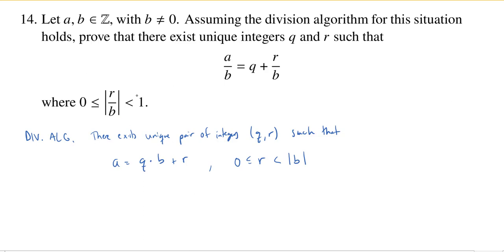Because we have the unique pair Q and R such that A is equal to QB plus R, well, what do we have? Well, let's just divide everything by B, which, by the way, because B is non-zero, that makes sense. Thus, A over B is equal to Q plus R over B.